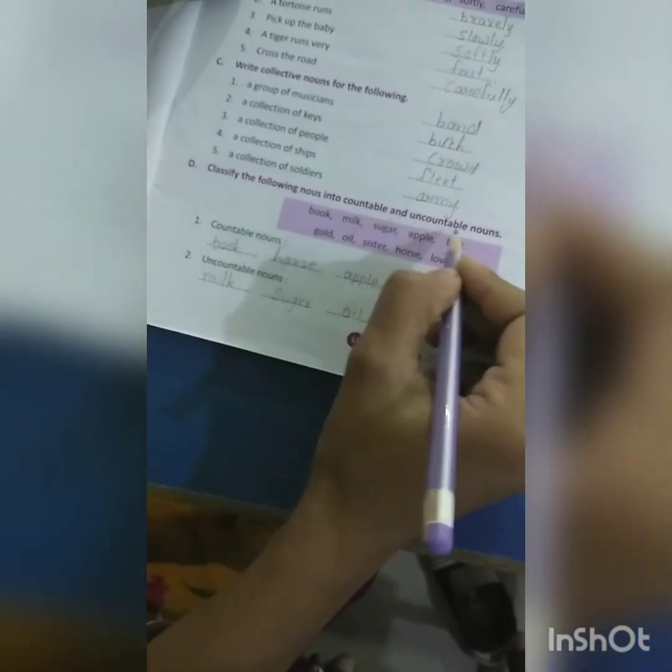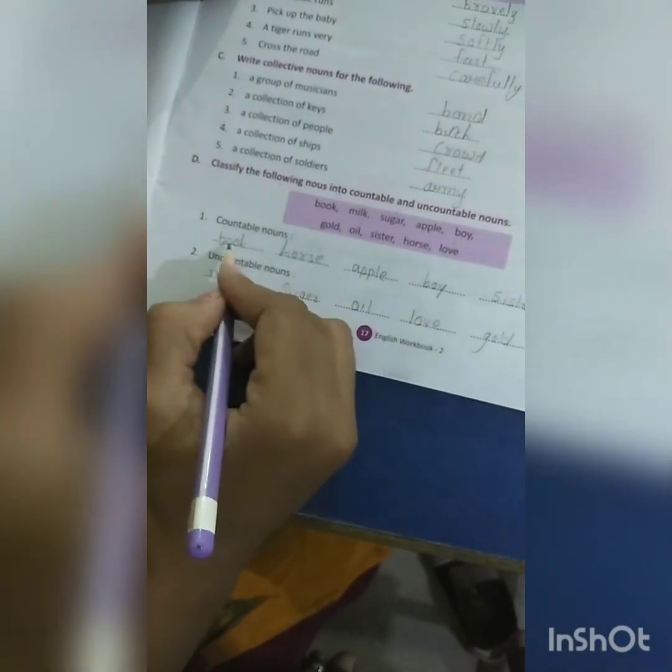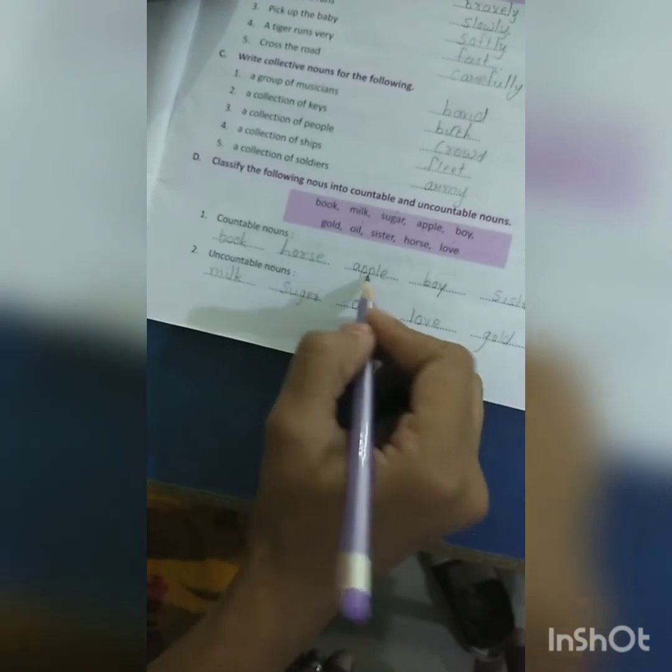Exercise number D: Classify the following nouns into countable and uncountable nouns. Countable: book, horse, apple, boy, sister. Uncountable: milk, sugar, oil, love, and gold. Okay, come to the chapter.